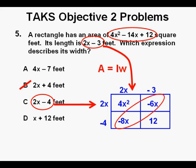Next, we combine our like terms, negative 8x and negative 6x. And they add up to negative 14x, which is shown in red at the center. And the product is 4x squared minus 14x plus 12. And therefore, C is our correct answer.